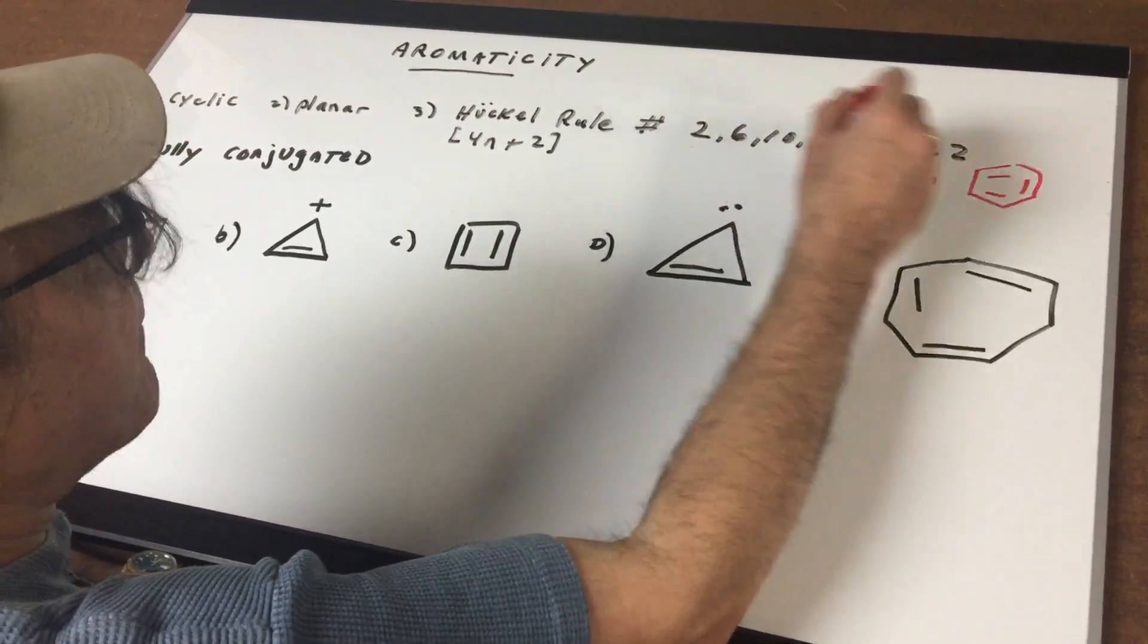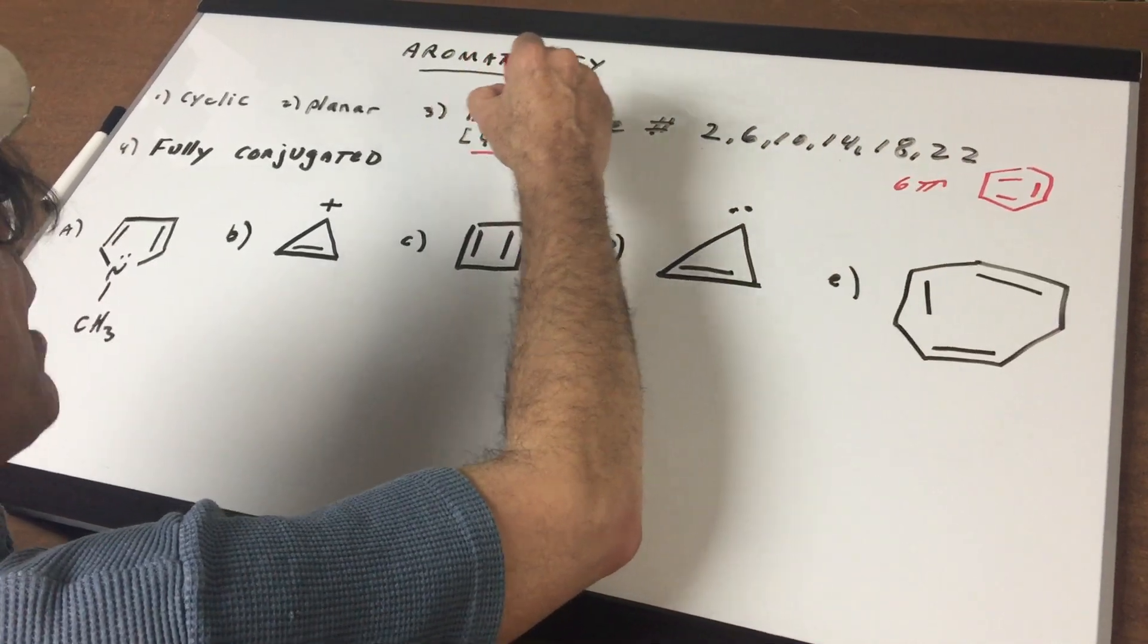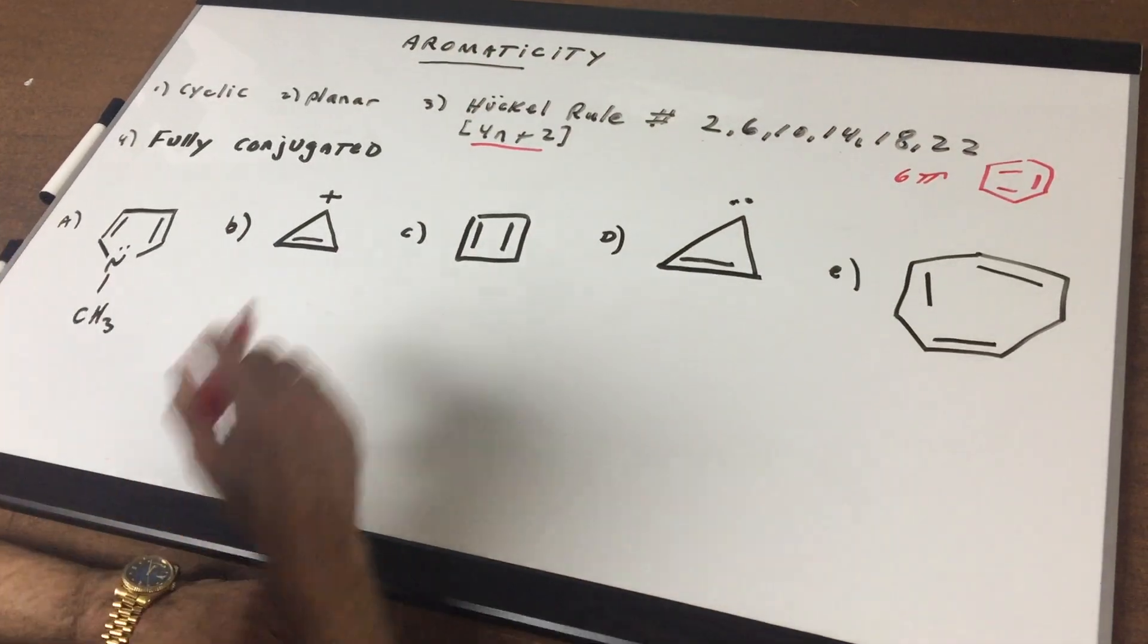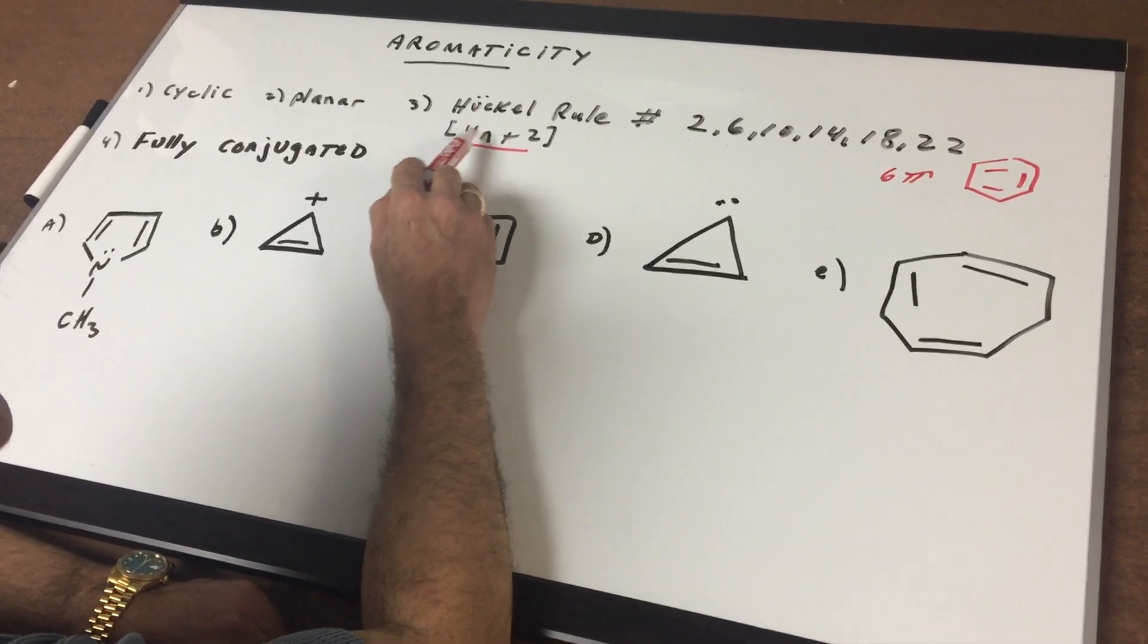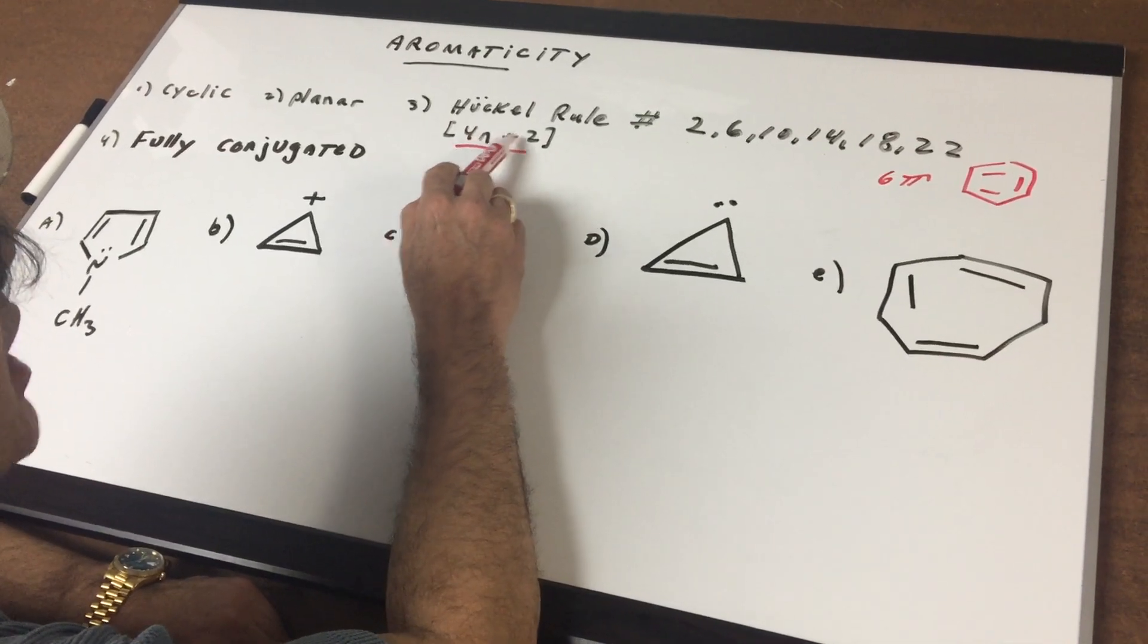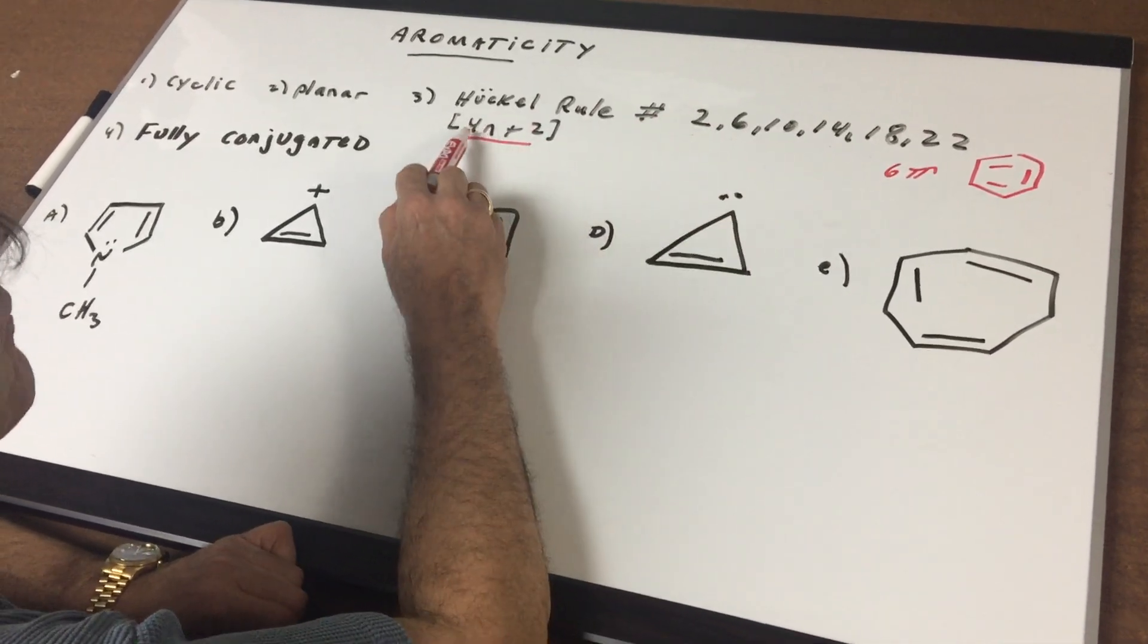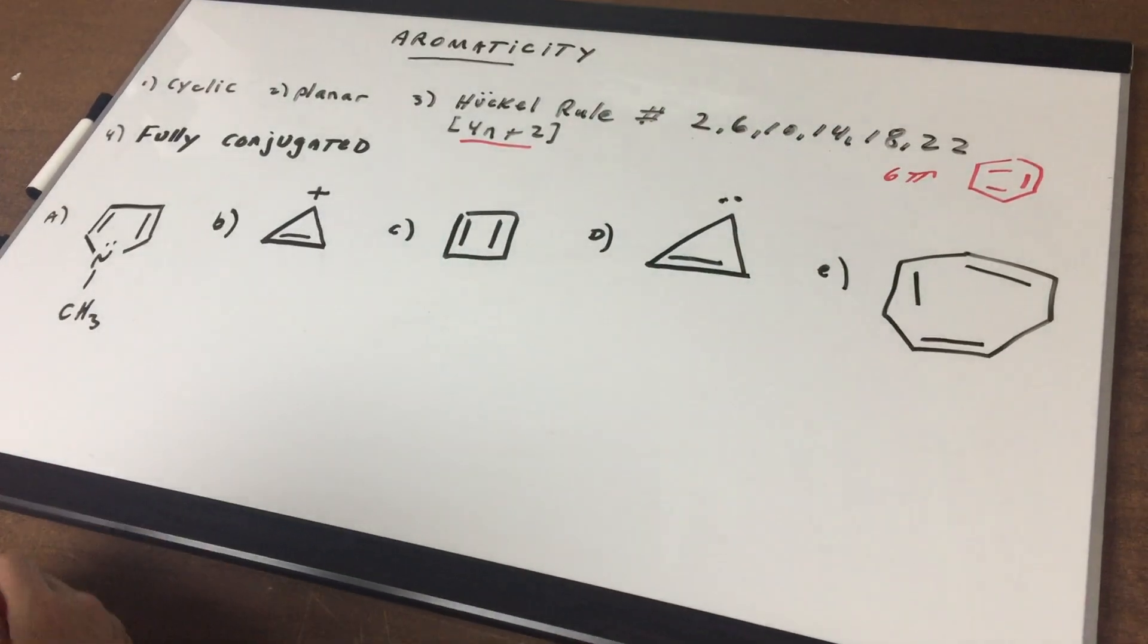By the way, if you ever forget these numbers, 2, 6, 10, 14, 18, 22, just remember 4n plus 2. So if n is 0 and you just plugged in 0, 4 times 0 plus 2 will give you 2. 4 times 1 plus 2 will give you the 6. 4 times 2 is 8 plus 2 gives you the 10 and so forth.